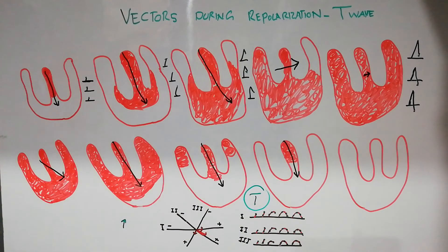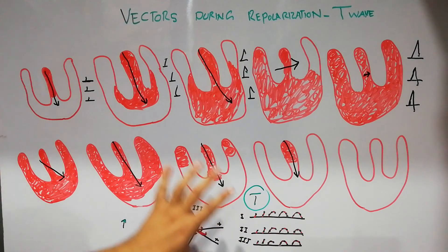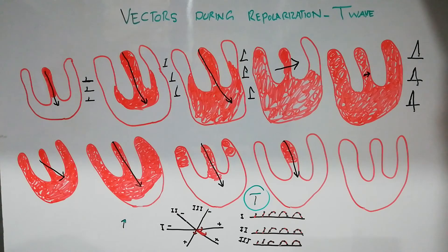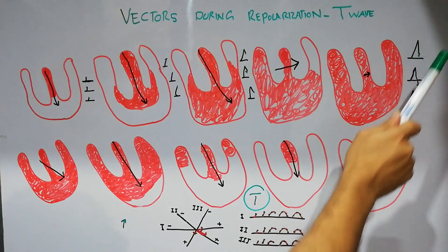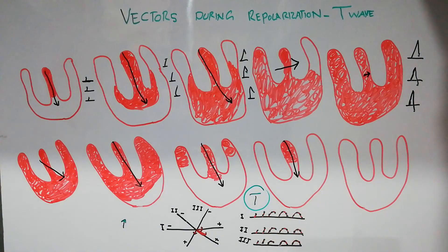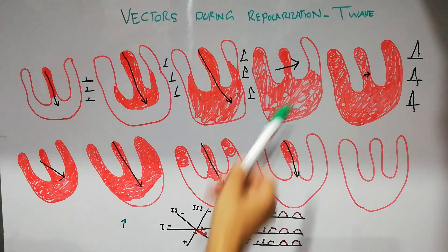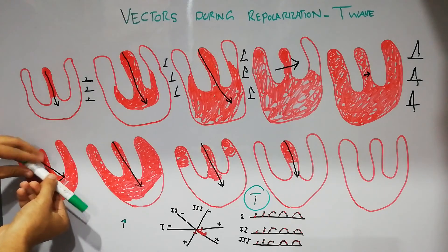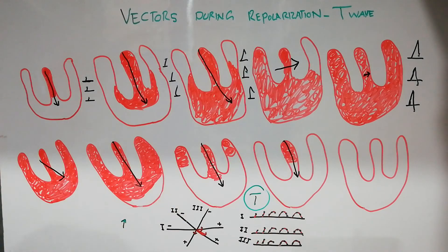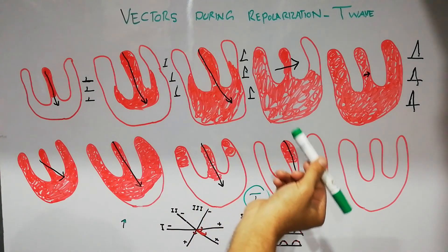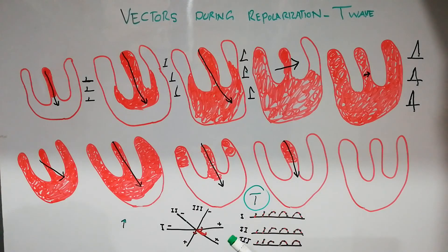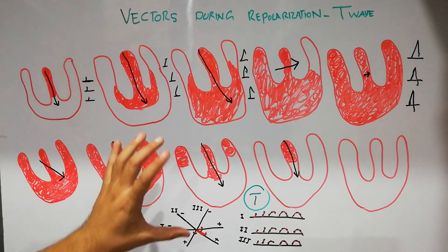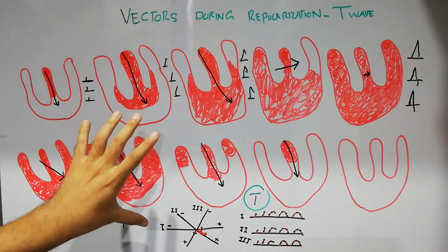One important thing to note is that during the depolarization process, the wave in lead 1 remained positive but the waves in lead 2 and lead 3 came into negative territory, giving a negative deflection due to movement of the vector in the opposite direction. But during the repolarization process, the direction of the vector remained the same — it did not shift toward the opposite side. So the deflection on all three bipolar limb leads remained in the positive territory and did not close below the zero line. That is a simple explanation for the formation of the T wave and its vectorial analysis.